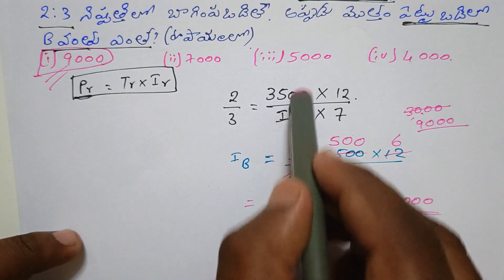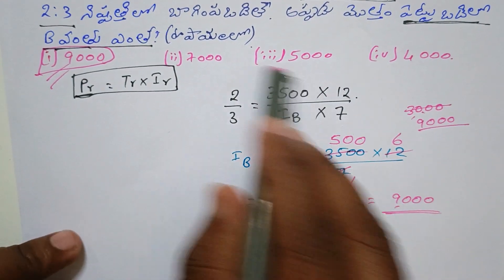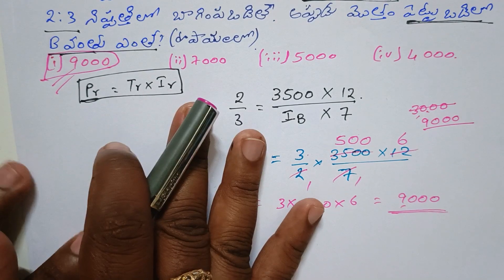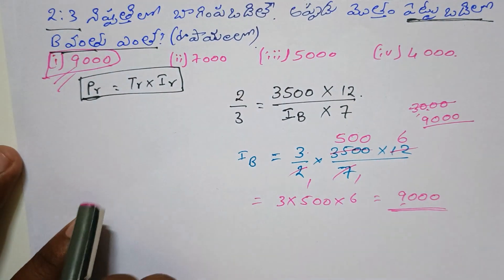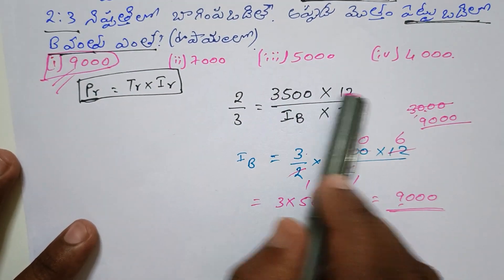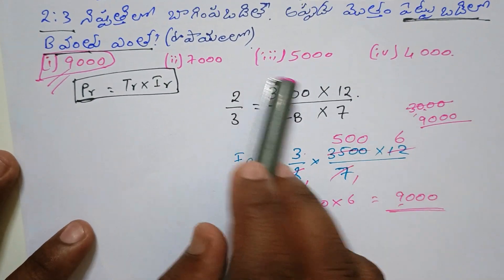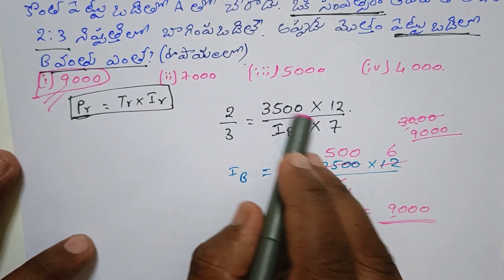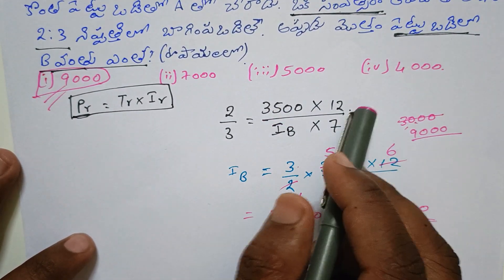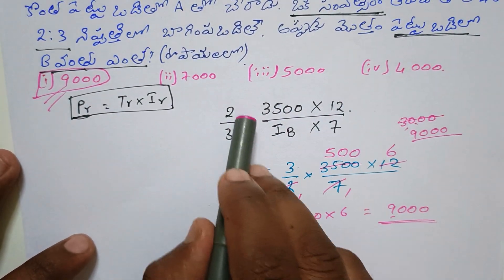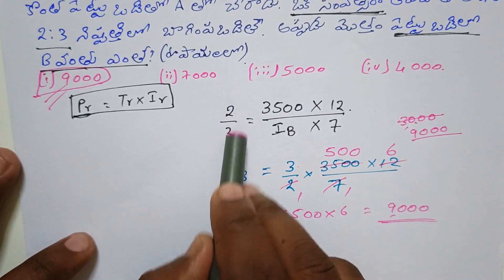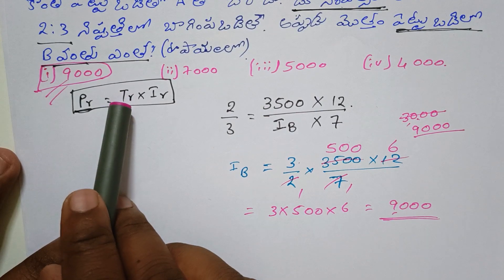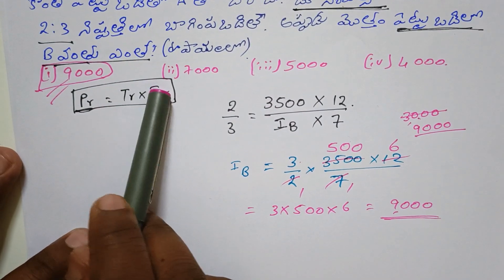Only one type of question is asked: about profit ratio, investment ratio, and time ratio. First, you will be asked the investment ratio; then given the time ratio and profit, you find the profit ratio. And vice versa: given profit ratio and time ratio, find investment ratio.